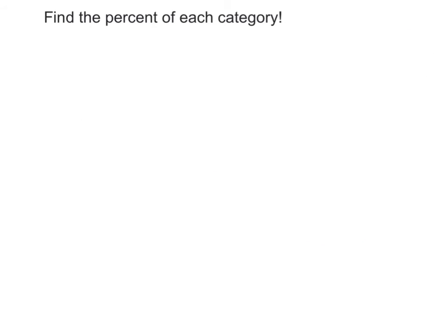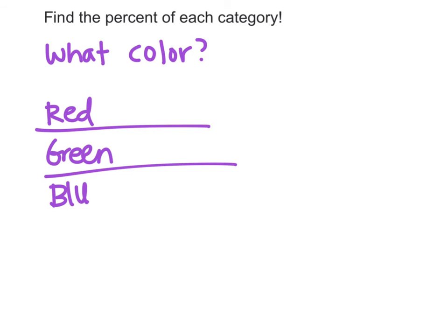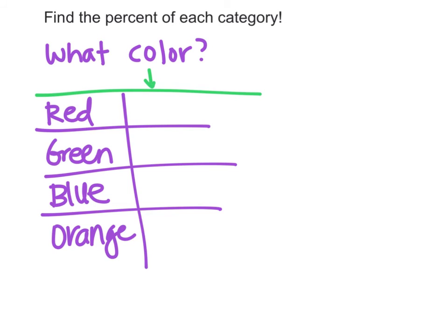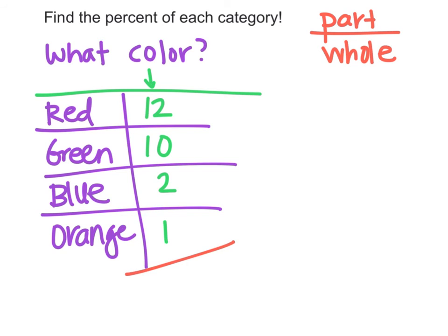The next step in making a circle graph is to find the percent of each category. Let's say I had a survey asking what's your favorite color, and I made a frequency table. Some people chose red, green, blue, and orange. In my frequency table I wrote how many people chose each color - that's called the frequency. Let's say 12 people chose red, 10 chose green, 2 chose blue, and 1 chose orange. Your next step is to figure out what percent of people chose each color. When we learned about percents, we know percent means part over whole. We need to figure out how many people I actually surveyed. Add these up - 12 and 10 and 2 and 1. If I add those up that is 25 people took this survey.